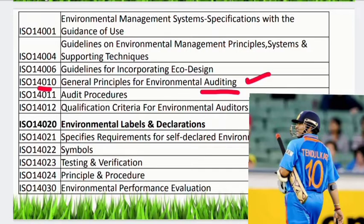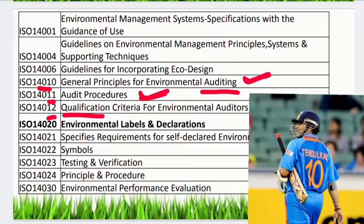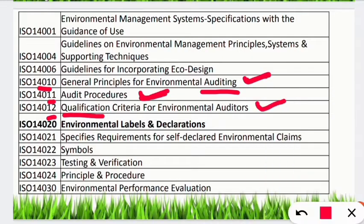ISO 14011: after Tendulkar does the auditing, he will have his own procedures. Plus 1 of 10 is 11, so 14011 is for audit procedures. Then ISO 14012: after the auditing and using audit procedures, Tendulkar will qualify some players for international cricket. So 14012 is for auditor qualifications. So 14010, 14011, and 14012 are clear.